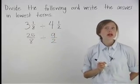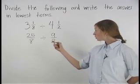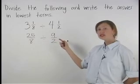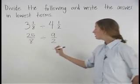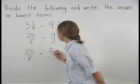Remember that dividing by a fraction is the same as multiplying by the reciprocal of that fraction. So here, 25 eighths divided by 9 halves is the same as 25 eighths times 2 ninths.